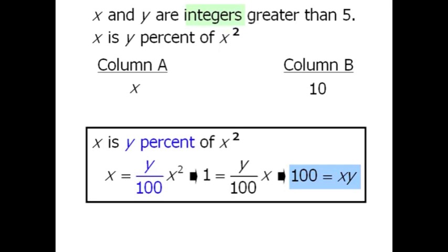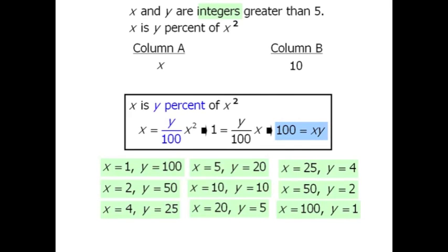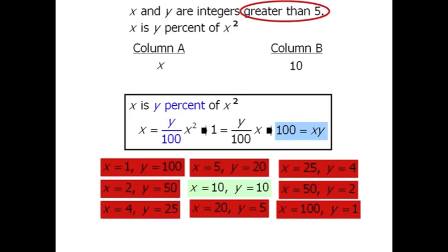Now if x and y are both positive integers, then x and y can have the following sets of values. Now if we keep in mind that x and y are also greater than 5, we must eliminate almost all of our sets of values except for one.